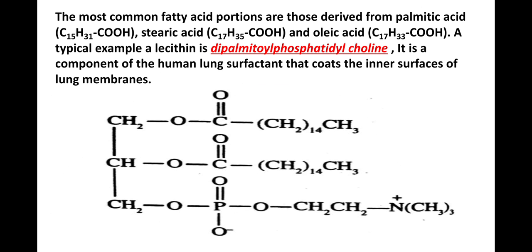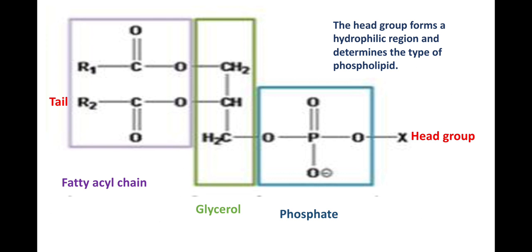The most common fatty acid portions are those derived from palmitic acid (C15H31COOH), stearic acid (C17H35COOH), and oleic acid (C17H33COOH). A typical example of lecithin is dipalmitoylphosphatidylcholine. Here is the picture of it, and it is a component of the human lung surfactant that coats the inner surface of the lung membranes.